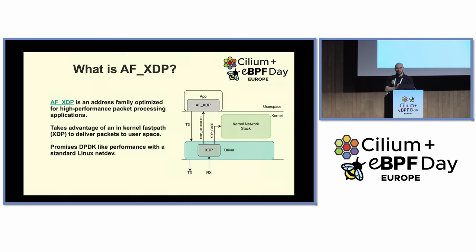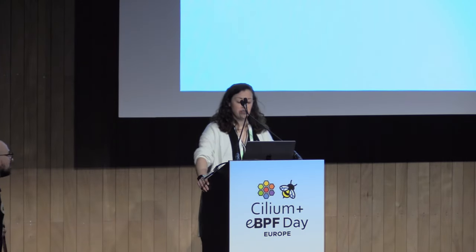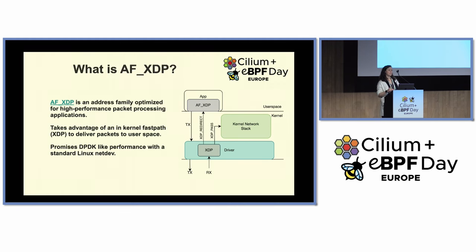I'll hand you over to Mariam to talk about AF_XDP. So, what is AF_XDP? It's an address family optimized for high-performance packet processing applications. It promises DPDK-like performance but with a standard Linux networking interface. It literally attaches a BPF program directly onto the interface — specifically, it's an XDP program capable of redirecting packets to an AF_XDP socket that sits in user space, and then your application consumes things from that AF_XDP socket.